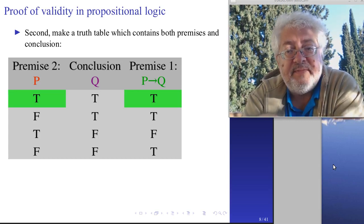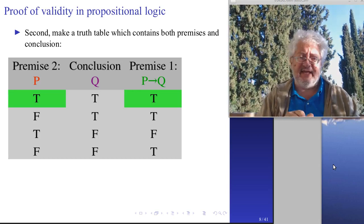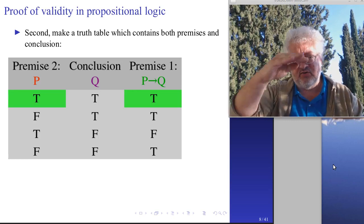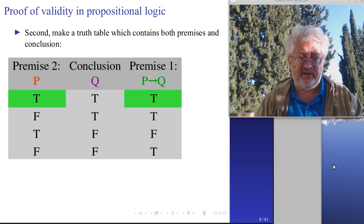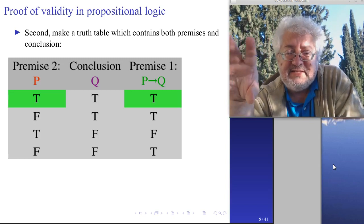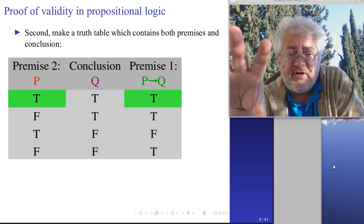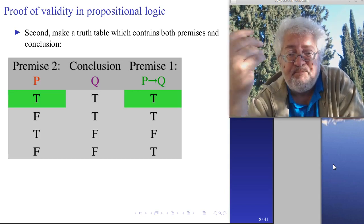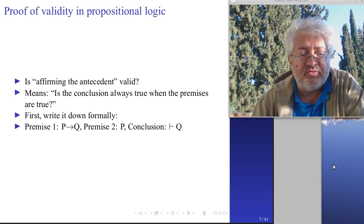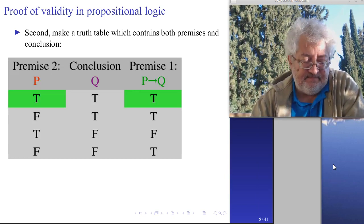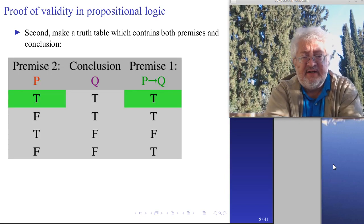You can write premises and conclusion in one line using the turnstile character - that strange symbol that looks like a sideways T. This is called a turnstile and it shows that the conclusion follows from these premises - it shows entailment. Now I make a truth table showing both the premises and the conclusion: I have p, q, and p implies q. This is just a truth table for an implication.